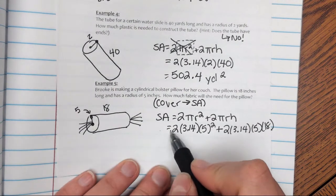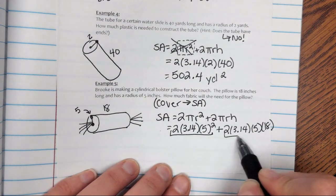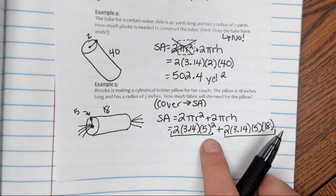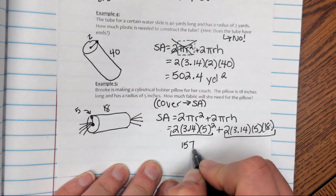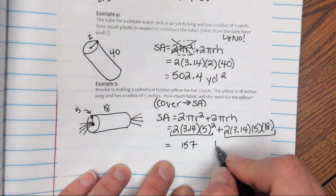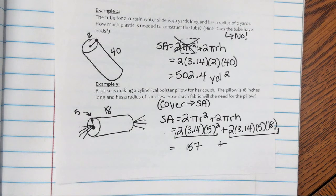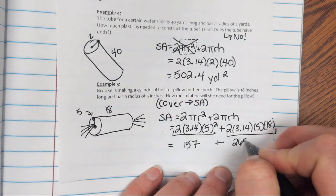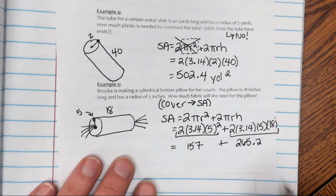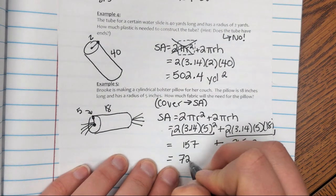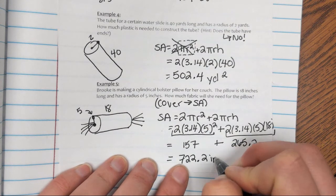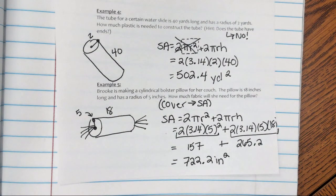Since I have a plus sign, I need to simplify in two steps. I'll square first and then multiply by 2 times 3.14, giving me 157 for that first piece, plus 2 times 3.14 times 5 times 18 giving me 565.2 for my second piece. Adding both together, I get 722.2 square inches of fabric.